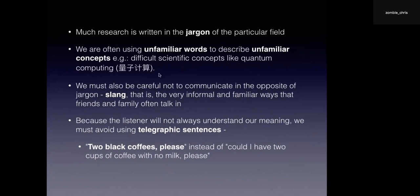Someone actually did an informative speech on quantum computing last year — there's a lot of technical information even at the basic level to understand it, so it wasn't really a good choice, but the person tried their best. When we have unfamiliar words, we need to make sure we understand what they mean and understand their place in describing unfamiliar concepts. Very few regular people in the street are going to know how to fix a quantum computer. We also need to avoid communicating in slang — the opposite of jargon — which is a highly familiar way that friends and family talk. We need to avoid telegraphic sentences and talk in complete sentences so all the necessary information is clearly communicated.